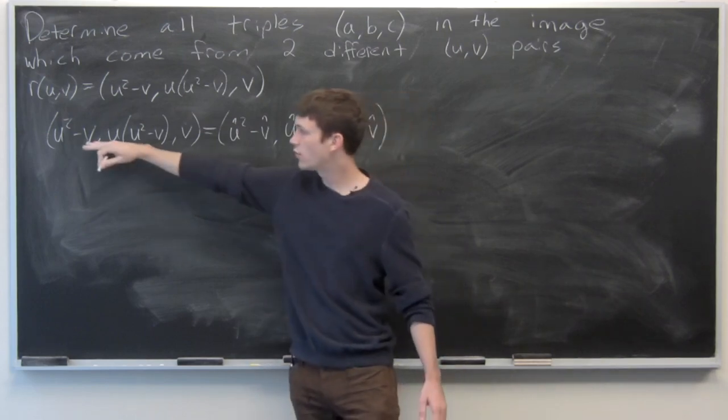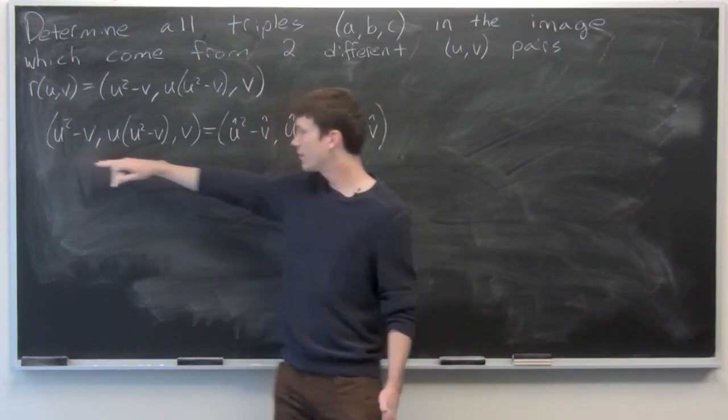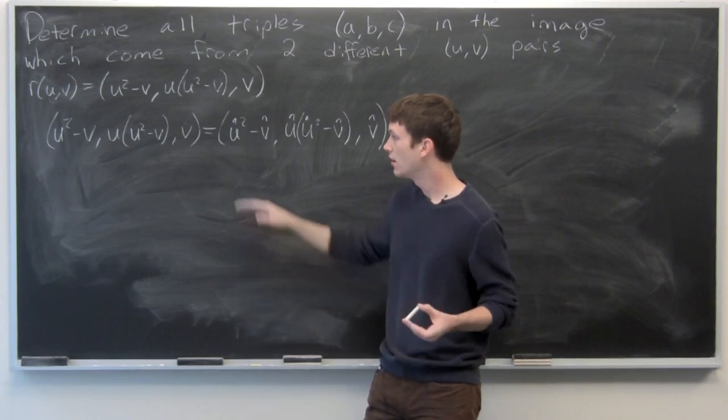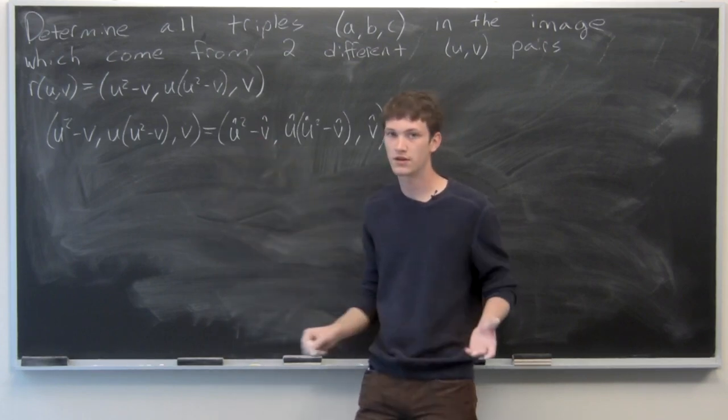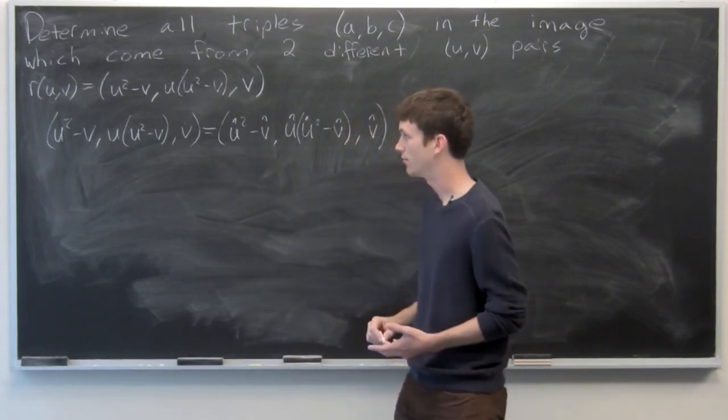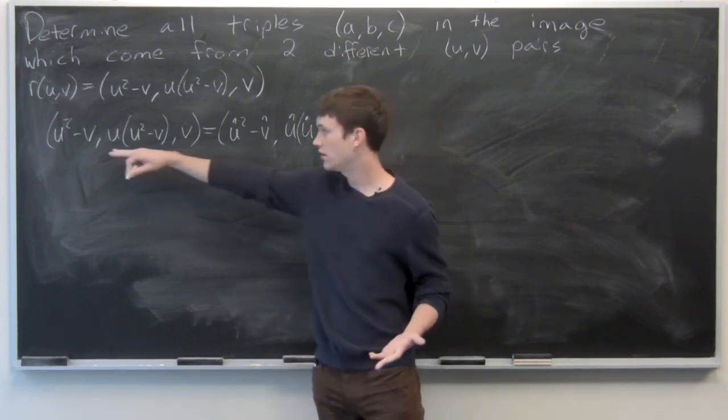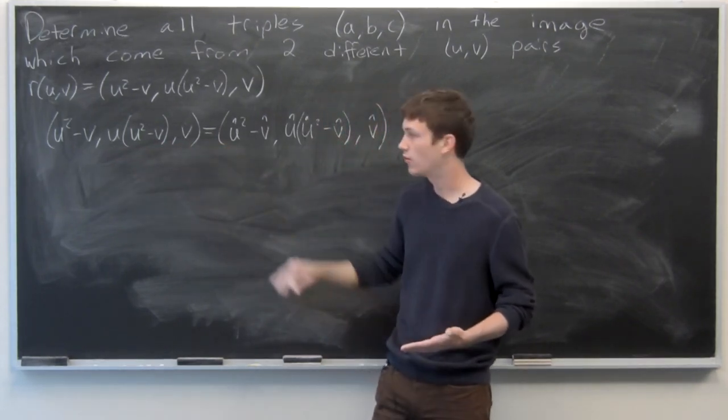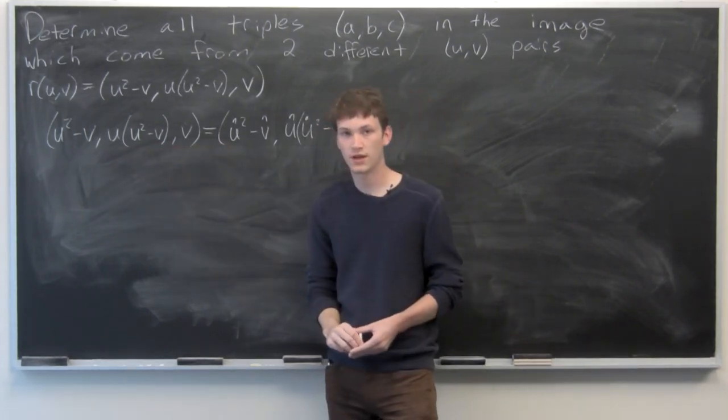We'll take one point as u-v and the second point as u-hat v-hat, and we'll set them equal to each other and see if we can find a case where u doesn't equal u-hat or v doesn't equal v-hat or both.